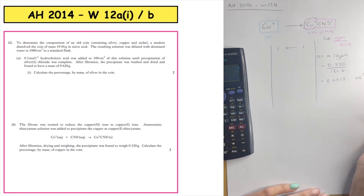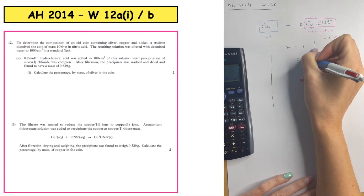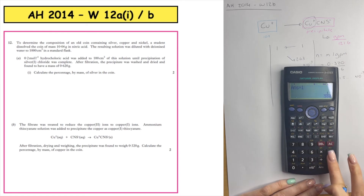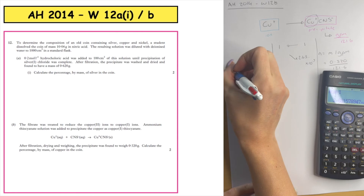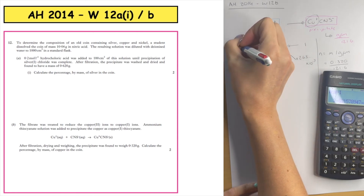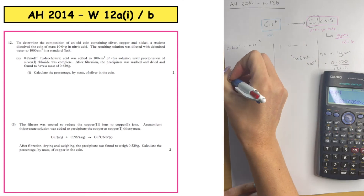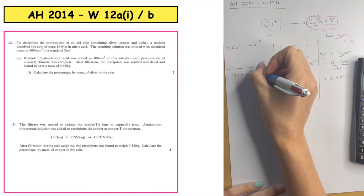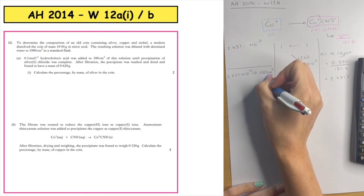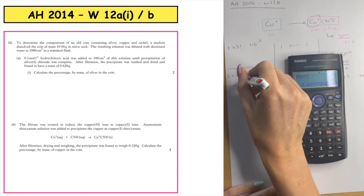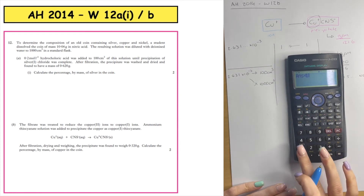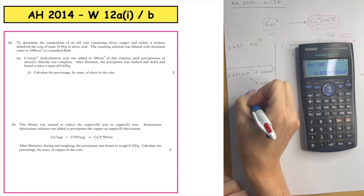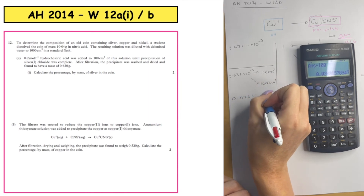Putting 0.320 ÷ 121.6 into the calculator gives 2.6315 × 10⁻³ moles. There is only one copper ion in the precipitate, so it's a one-to-one ratio. Cross-multiplying: 2.6315 × 10⁻³ times 1 divided by 1 remains 2.6315 × 10⁻³ moles. Remember, that number of moles was found in only 100 cm³. We need to scale for the standard flask — that's the tricky part people forget. Multiplying by 1000 and dividing by 100 gives a total of 0.02631 moles of copper.